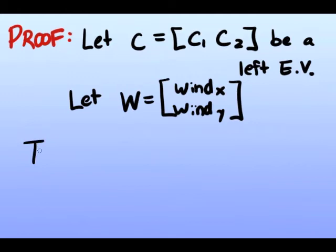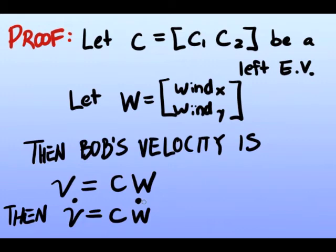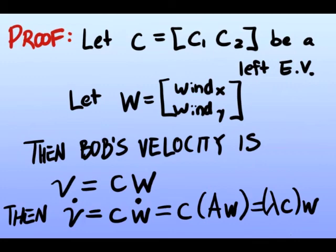Let C be the left eigenvector of the matrix A and let W be the wind. Then Bob's velocity is a linear combination, CW. We take the derivative of both sides to get V dot equals CW dot, but we can replace W dot with AW. We then replace CA with lambda C because we know that C was a left eigenvector of the matrix A.